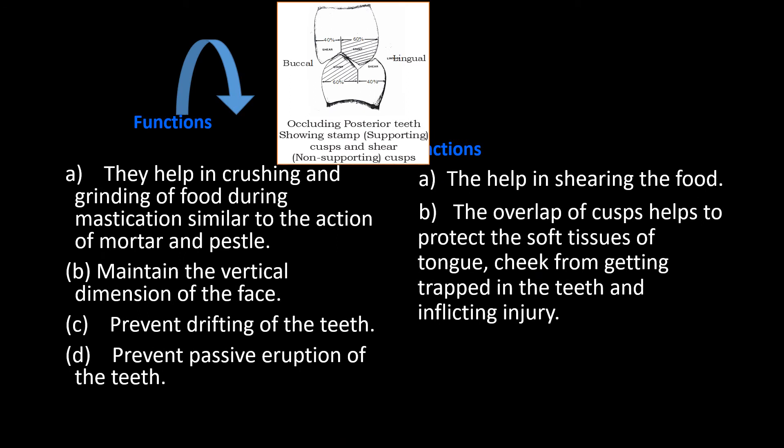Supporting cusps, since they are larger, broader, and in contact with the opposing fossa, help in crushing of food during mastication in an action similar to mortar and pestle. They also help to maintain the vertical dimension of the face, and since they contact and interdigitate with each other, they prevent the drifting and passive eruption of teeth. Non-supporting cusps help in shearing of food. Importantly, their overlap protects the soft tissues of the buccal mucosa and tongue from getting trapped between the teeth during biting or chewing. When you make a faulty restoration, the patient will often say they are constantly biting their cheek or tongue — that's why it's very important to reproduce these relations.